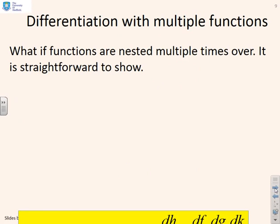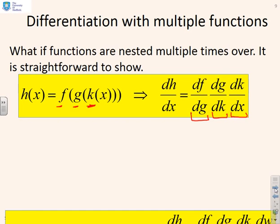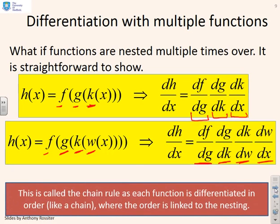What if functions are nested multiple times? If h is a function of g, and g is a function of k, then dh/dx equals (df/dg) times (dg/dk) times (dk/dx) — you multiply them all together. It's called the chain rule because they're all multiplied in a chain. For four nested functions where f is a function of g, g of k, and k of w, you simply apply them in order: (df/dg) times (dg/dk) times (dk/dw) times (dw/dx). The order is linked to the nesting.